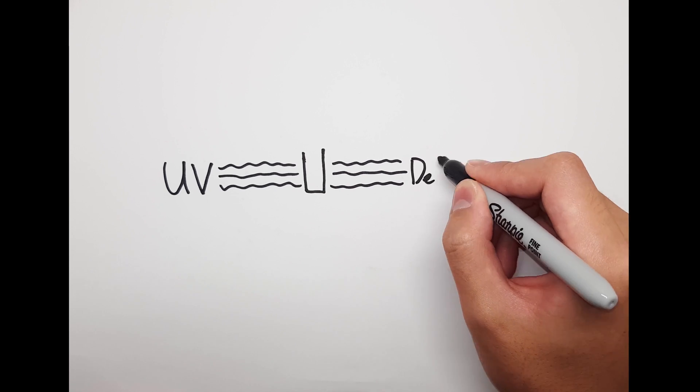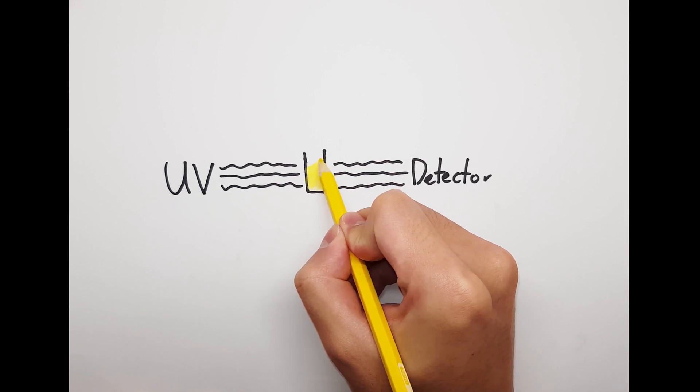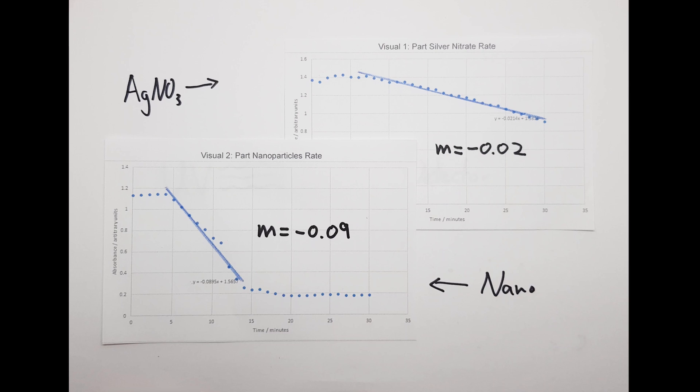We used two different catalysts: silver nitrate and silver nanoparticles. When we plotted absorbance at 450 nanometers over time, the sample with silver nanoparticles showed a steeper slope, proving that absorbance decreased faster.